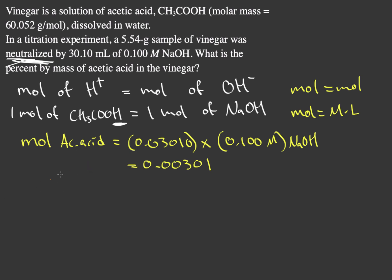That means we can also find our mass of acetic acid. So we have 0.00301 moles of acetic acid multiplied by our molar mass, which is 60.052 grams per mole. This gives us an answer of 0.181 grams. So we have 0.181 grams in this 5.54 gram sample.